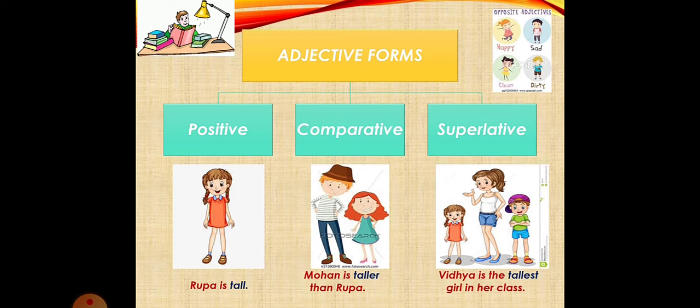The last one is: Vidya is the tallest girl in her class. In this, the comparison of Vidya is among her classmates. It means I'm comparing one person to many people at the same time. So here I'm using superlative degree.